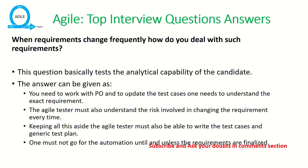The next question is: when requirements change frequently, how do you deal with them? You need to work with the product owner to update test cases and understand the exact requirement. The agile tester must understand the risks involved in changing requirements frequently. The team should write generic, flexible code that is easy to maintain and update with minimal cost or time. When requirements are frequently changing, it is not recommended to use automation, as there is no stability.